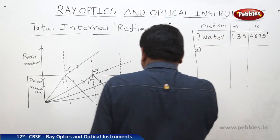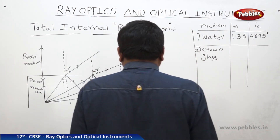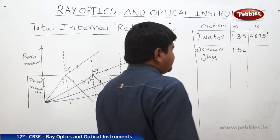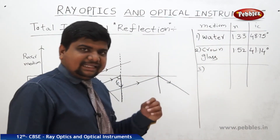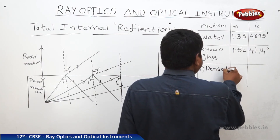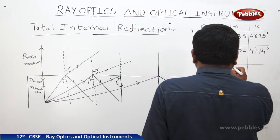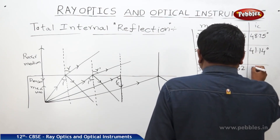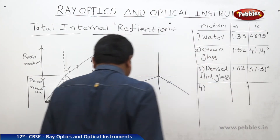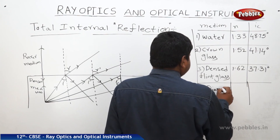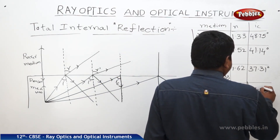The second medium is crown glass — its refractive index is 1.52 and its critical angle is 41.14 degrees. The third example is dense flint glass — its refractive index is approximately 1.62 and its critical angle is 37.31 degrees. And diamond has a refractive index of 2.42 with a critical angle of 24.41 degrees.